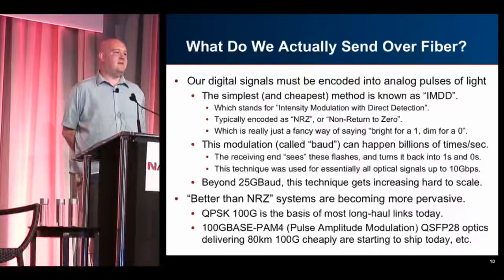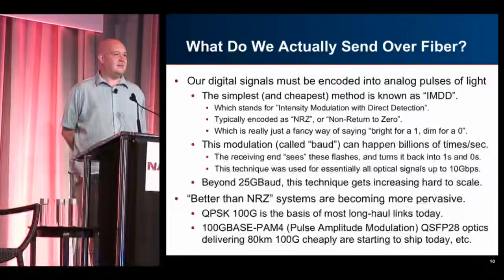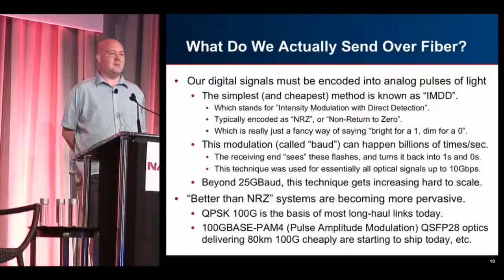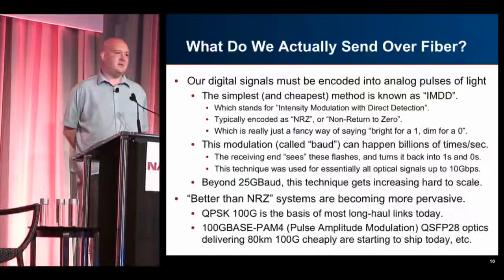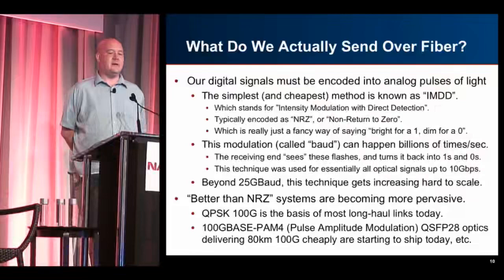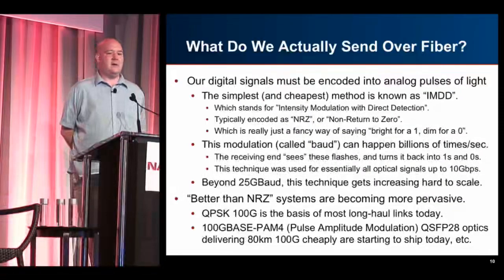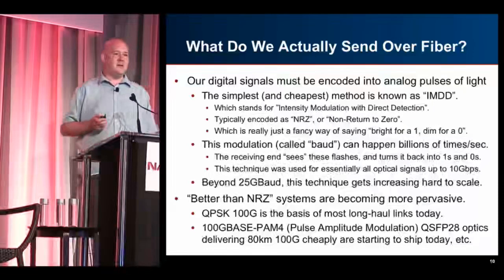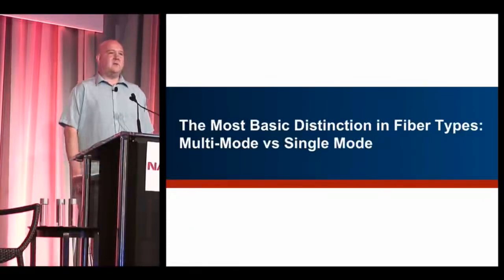The reason you see advances in optical technology getting beyond 10G is that we're finally moving past NRZ. For example, if you've got a long-haul system and you're buying a 100G wave from Chicago to San Jose, that's going to be a 100G QPSK-encoded signal. You're also starting to see things like PAM4 — pulse amplitude modulation — a simple way to roughly double the bandwidth. You're now able to build QSFP28 80km 100G optics cheaply. These advanced modulation schemes are what we actually send over the fiber.